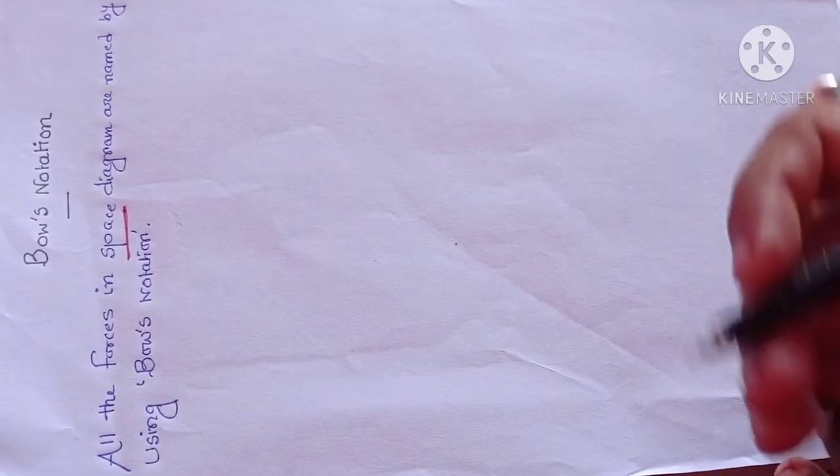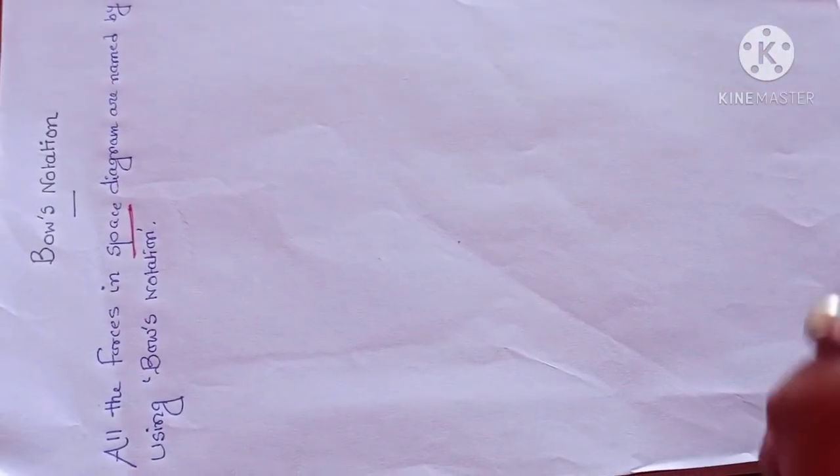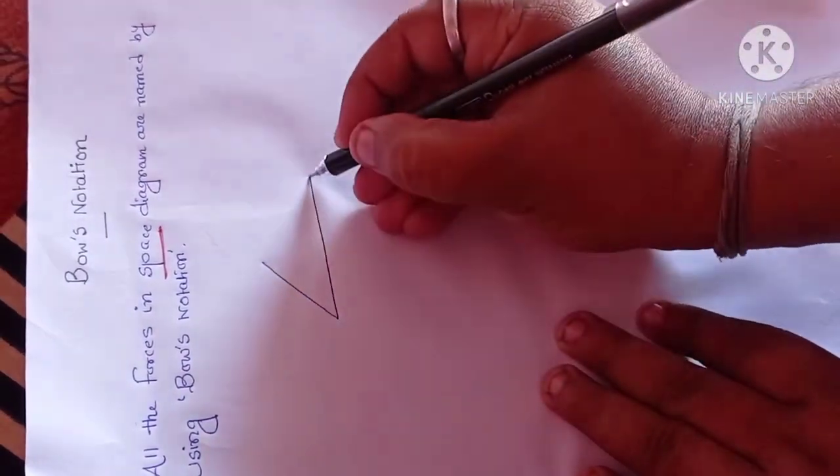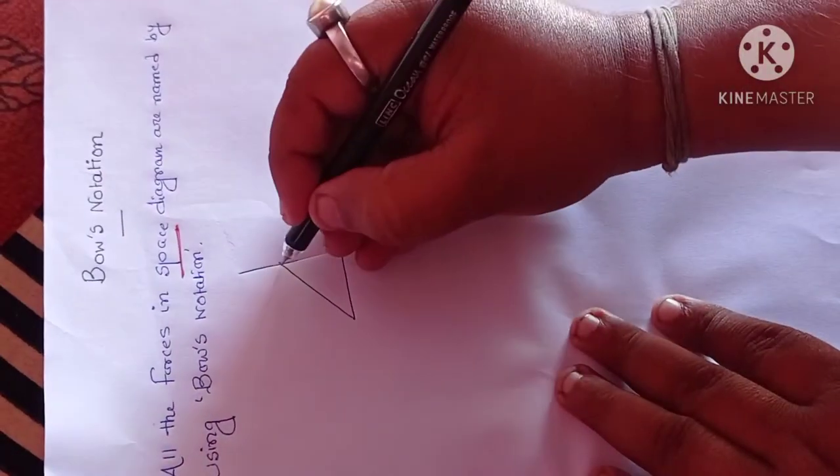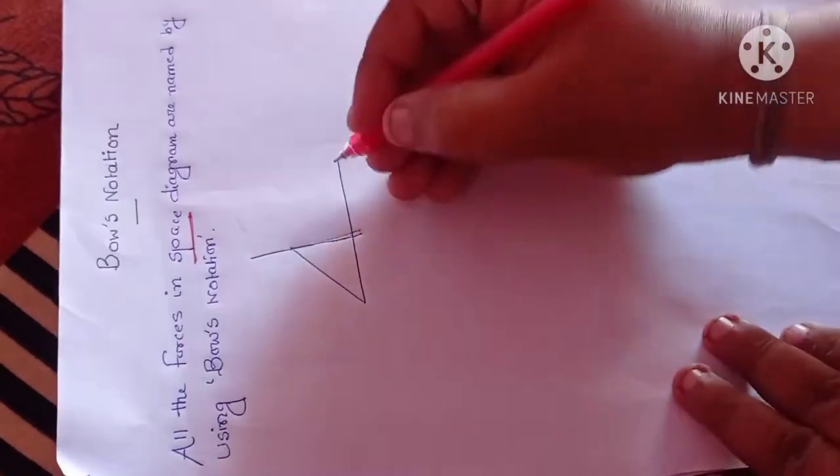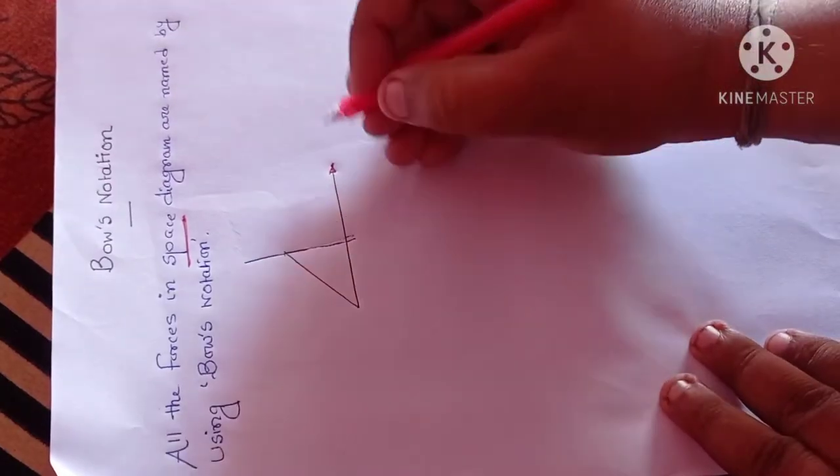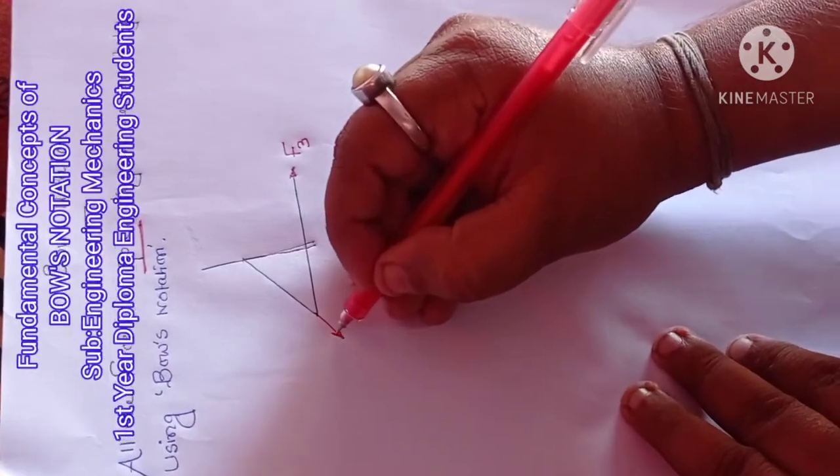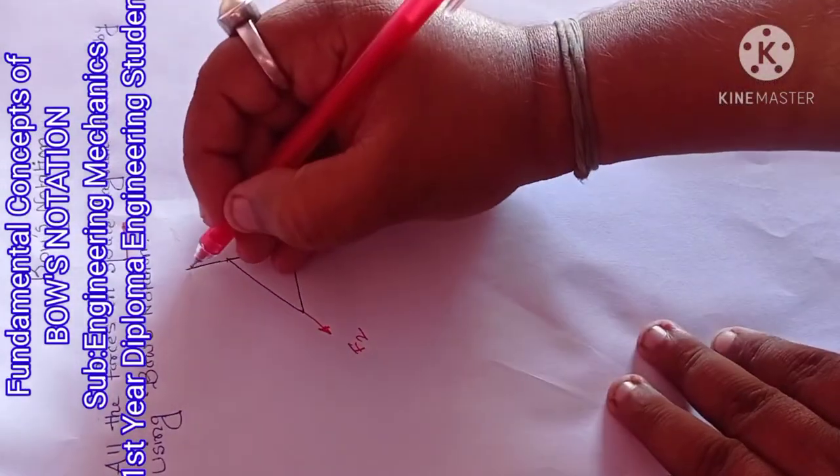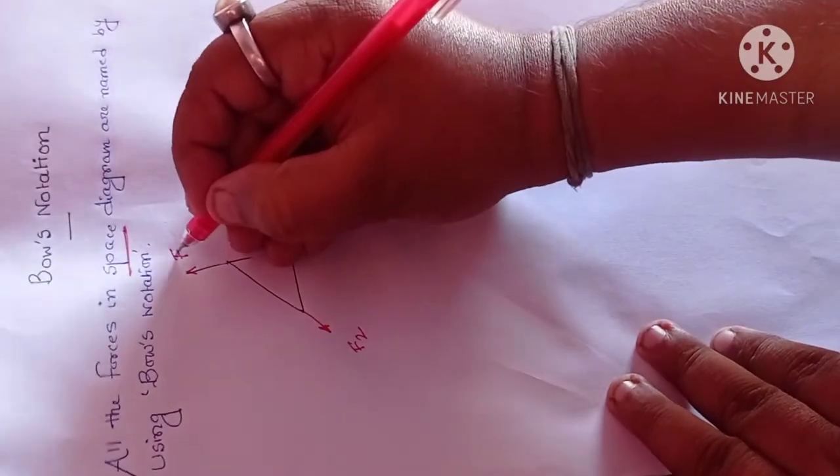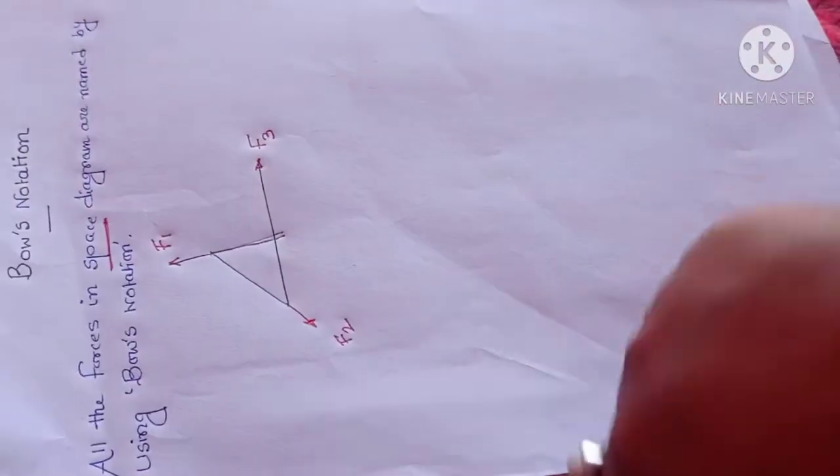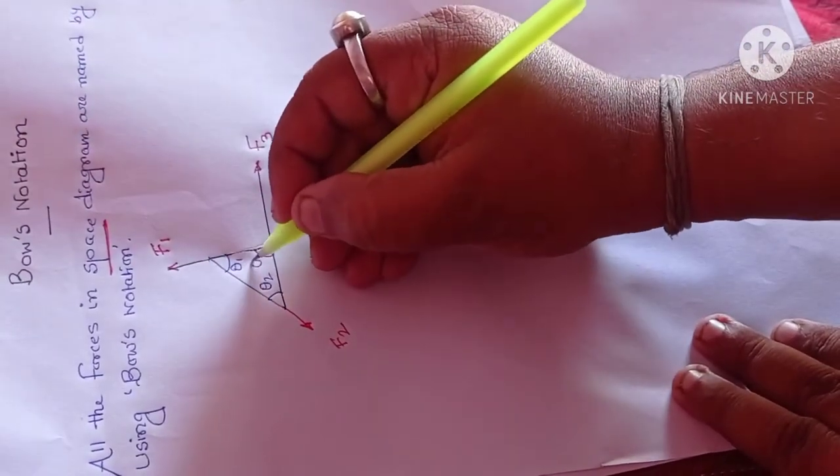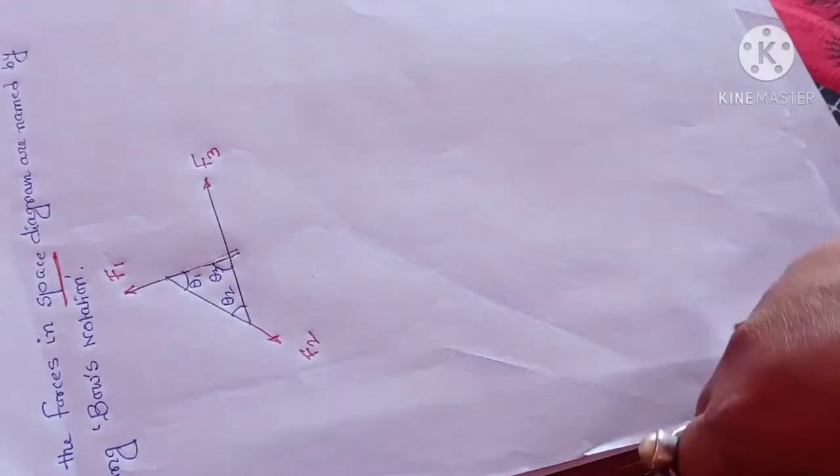Let's take a diagram. This force is known as F3, this is a force named as F2, and this is another force named as F1 as per Bow's notation. And if there are some intermediate angles, say theta 1, theta 2, and theta 3.